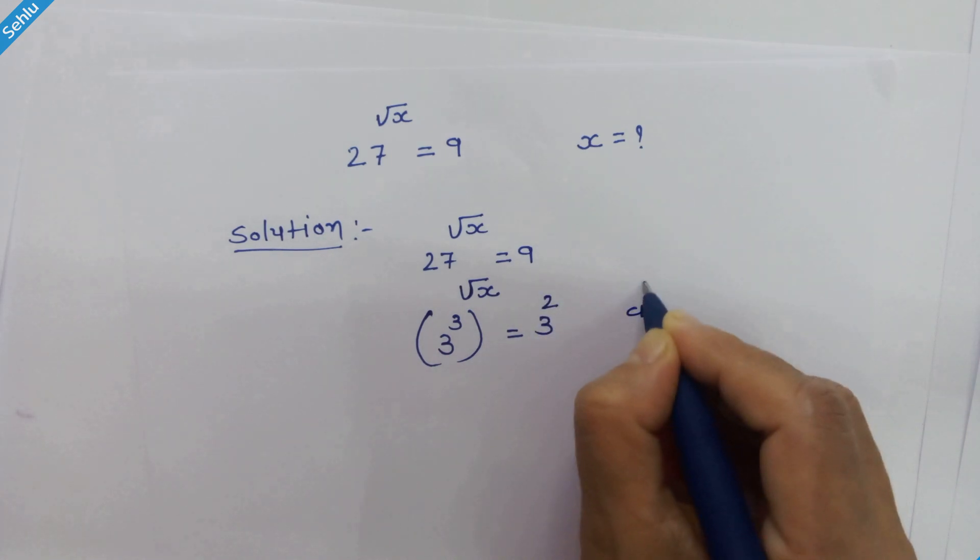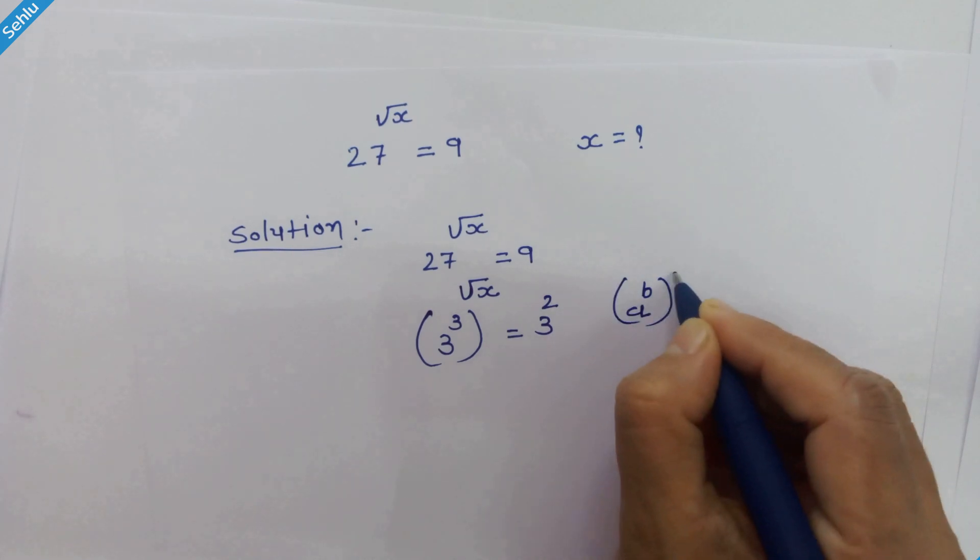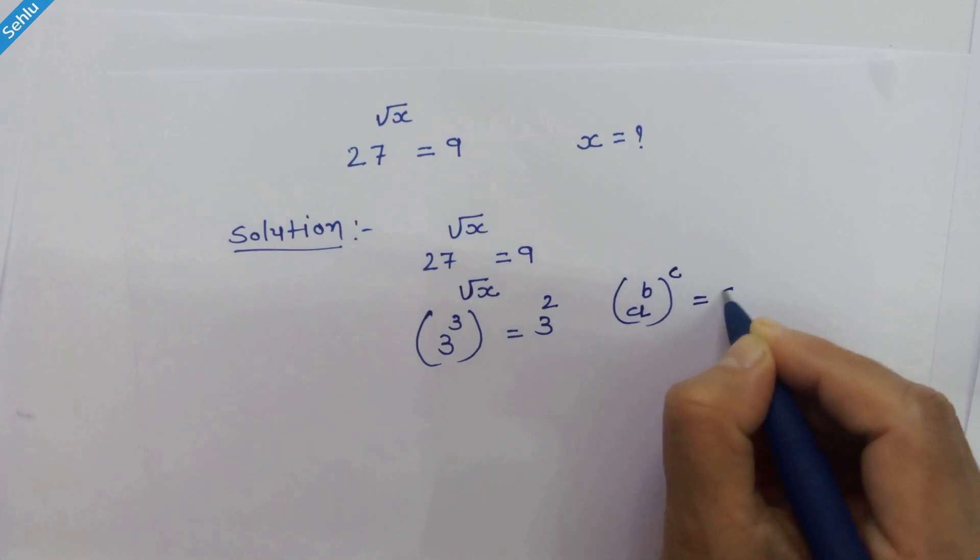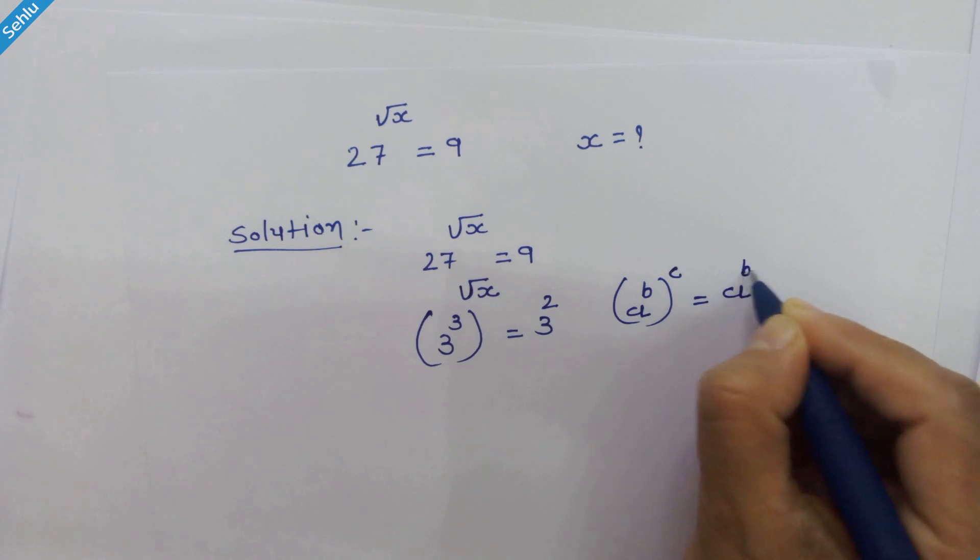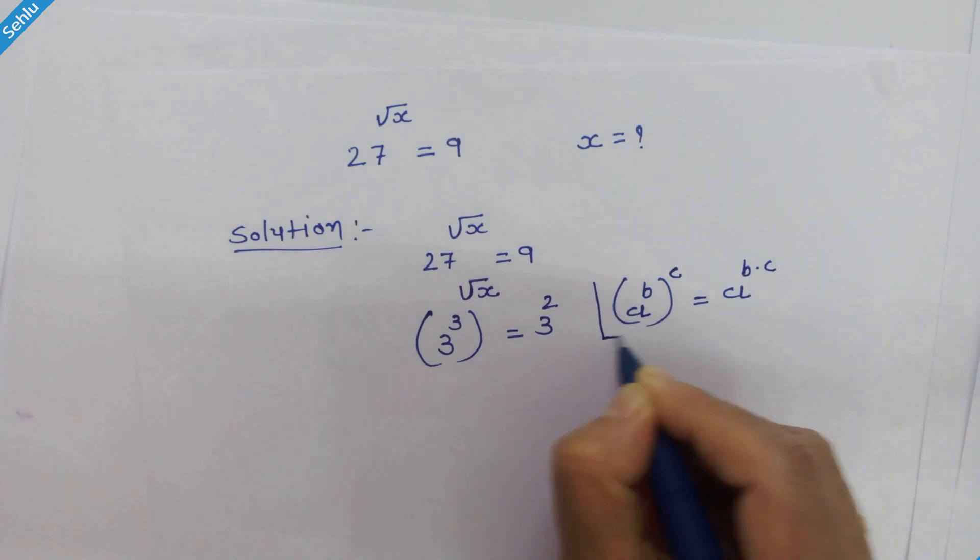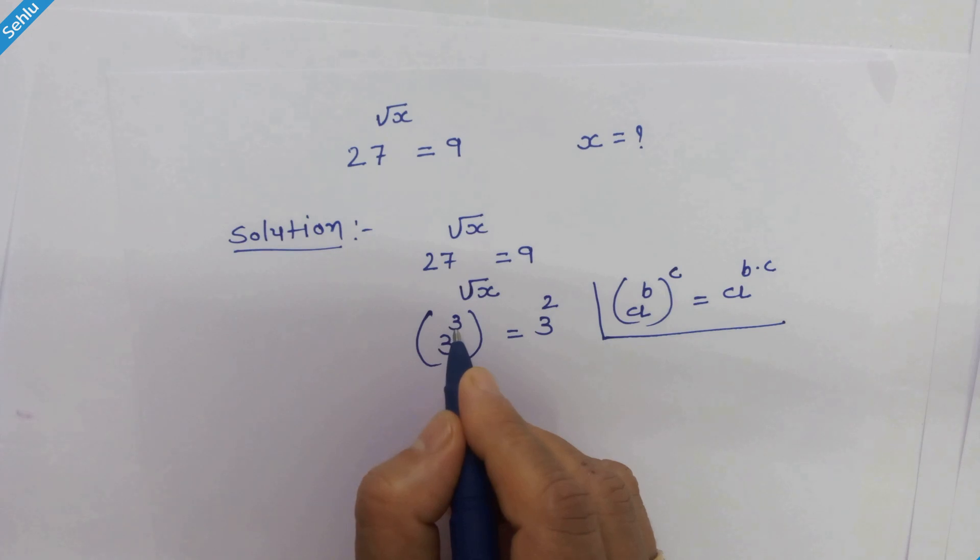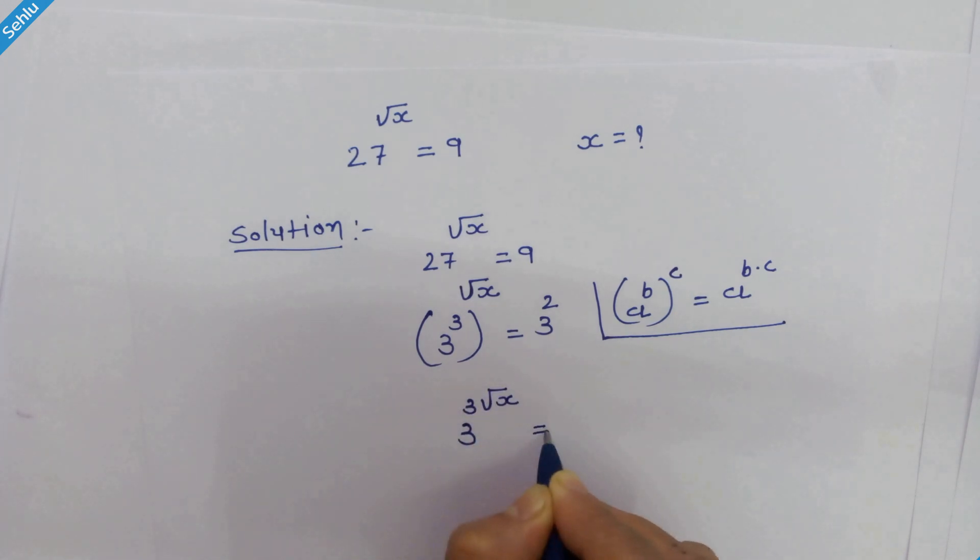Now if we have a raised to b, whole raised to c, then we can write a raised to b times c, and we will apply this rule here. This 3 and square root of x can multiply, so we have 3 raised to 3 times square root of x equals 3 square.